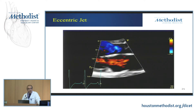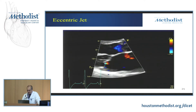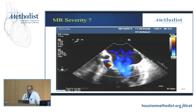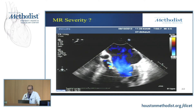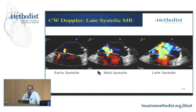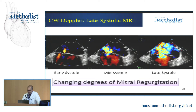We showed this example case already of a very eccentric jet where it can be hard to assess. Another example, as was already shown, is a patient with myxomatous disease where there's prolapse and there's a changing degree of mitral regurgitation. If you look at this, in early systole the size of the jet is very small, but in late systole you've got a very large amount of mitral regurgitation. With CMR, you're able to get an integrated volume of the total amount of reverse flow occurring throughout that cardiac cycle.